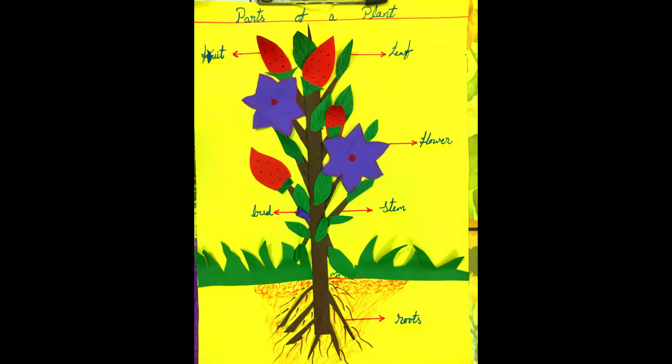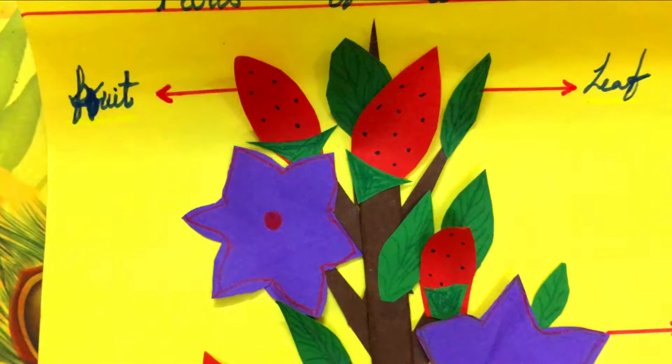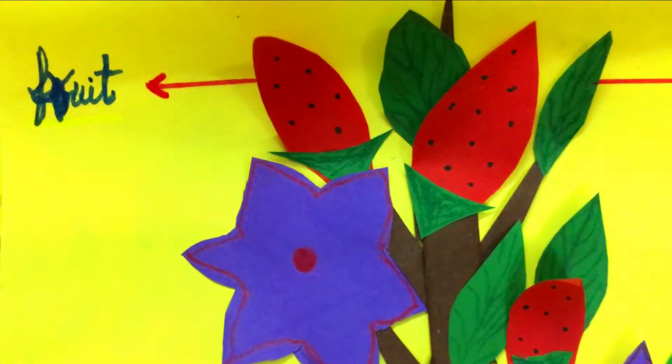So friends, plants have different parts: roots, stem, leaves, flowers, fruits, vegetables, branches and buds. So this is about parts of a plant.